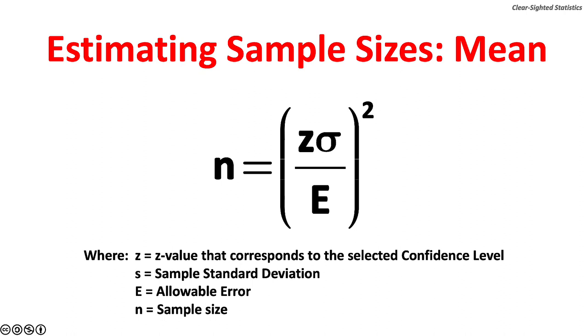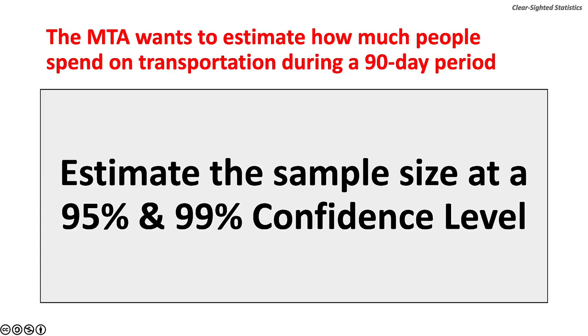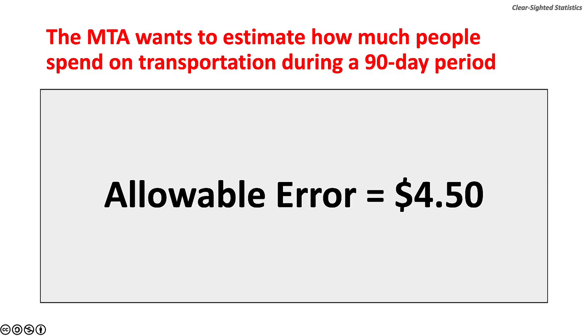The Metropolitan Transit Authority wants to estimate how much people spend on public transportation during a 90-day period. Estimate the sample size at a 95% and 99% confidence level. The population standard deviation is unknown, but the sample standard deviation is about $20. The allowable error is $4.5.